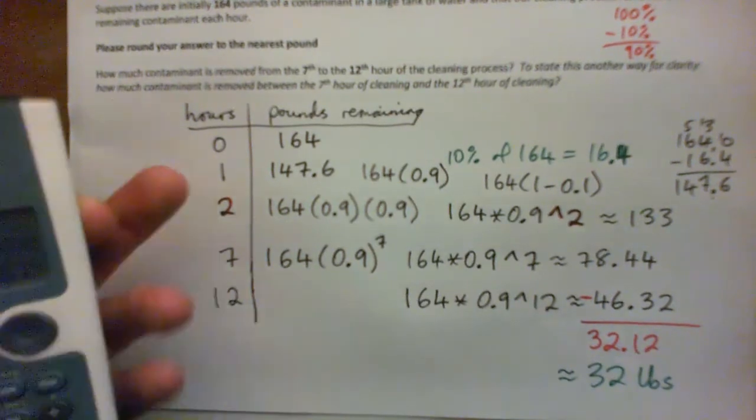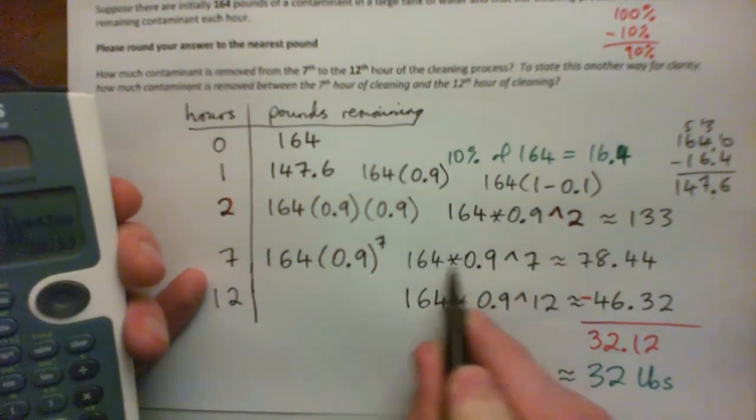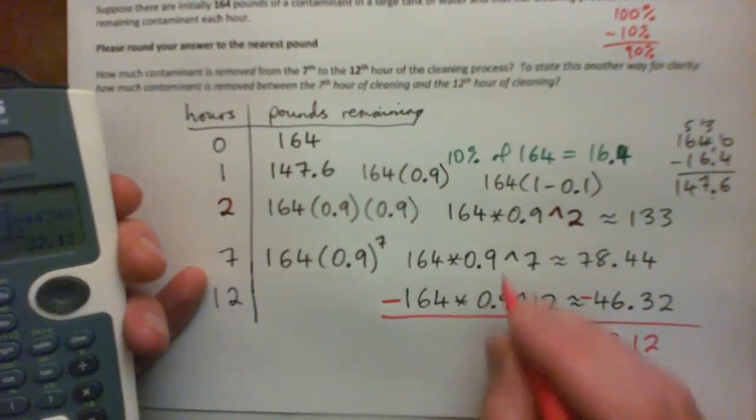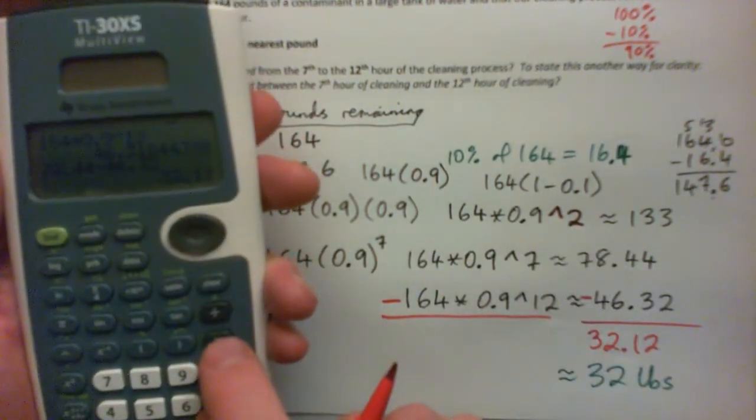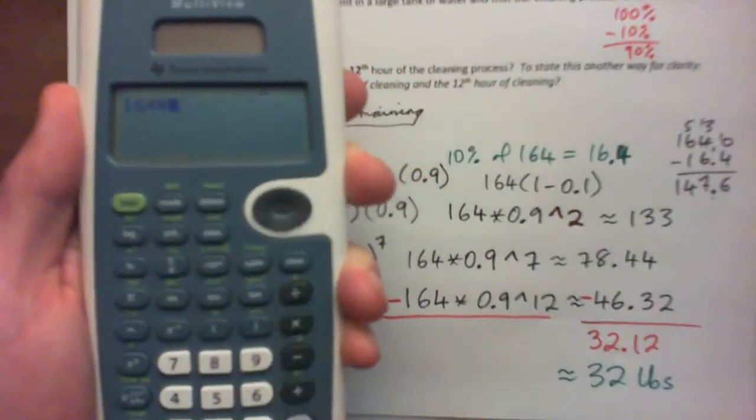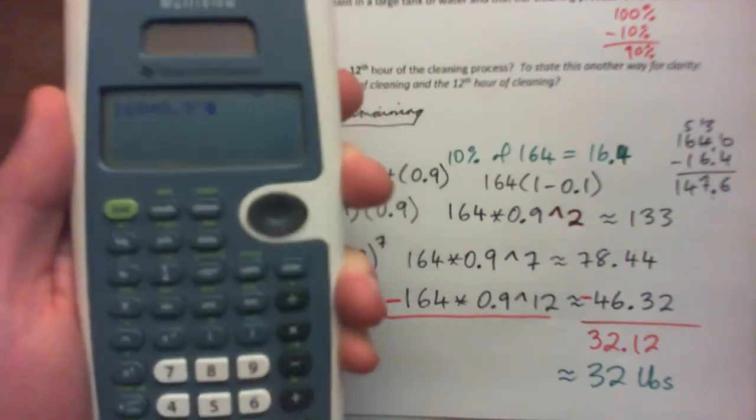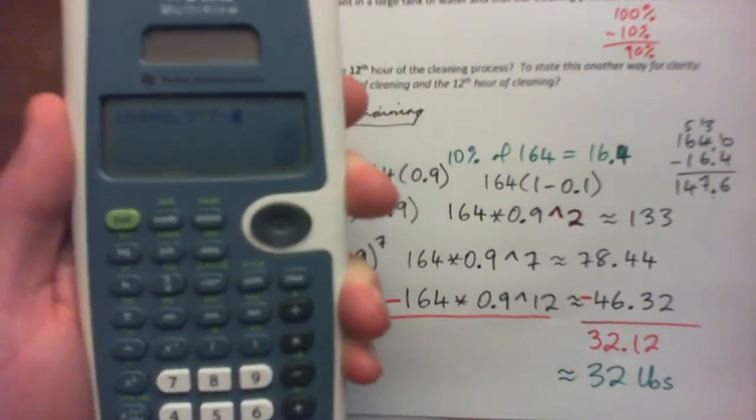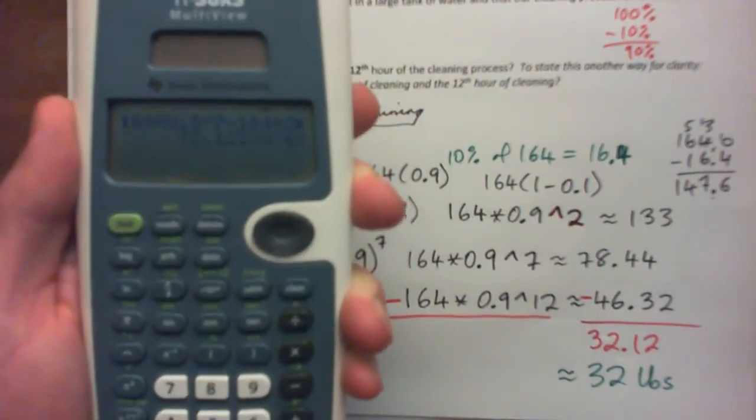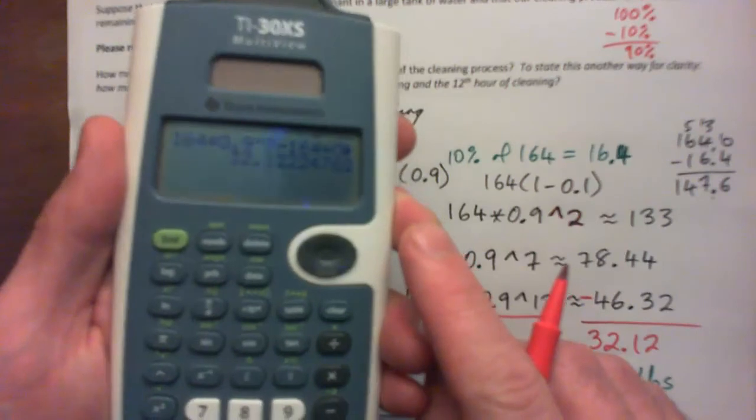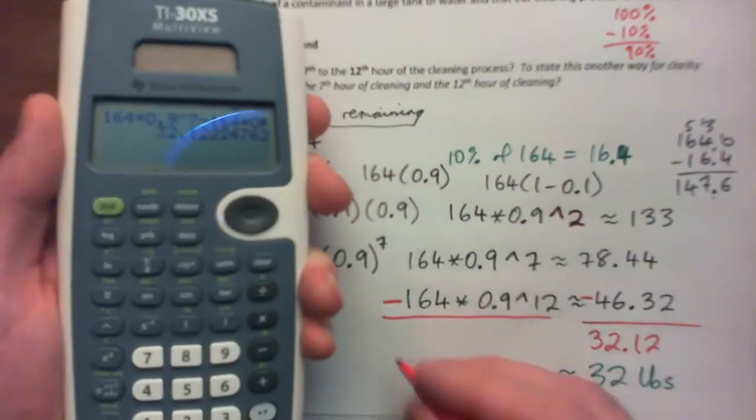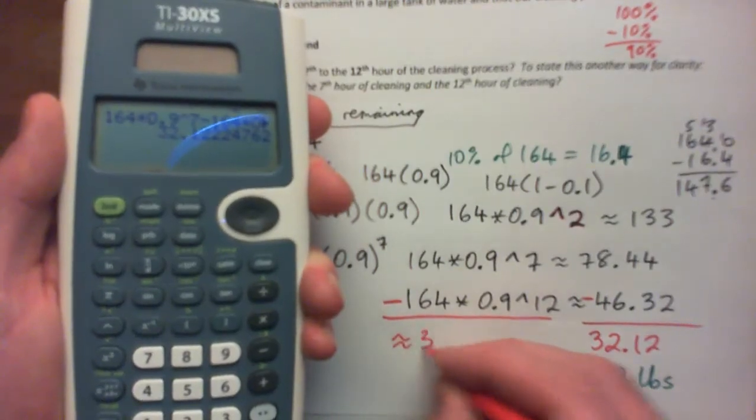And even a more neater way would be to just take this thing, this whole line here, and then subtract this line, and then that would give me the answer more exact. And it would be just one calculation. So I could have done 164 times 0.9 to the power of 7 minus 164 times 0.9 to the power of 12. And that would give me my 32.12. And that would reduce any errors if I did it all in one line. And again, that rounds to 32 pounds.